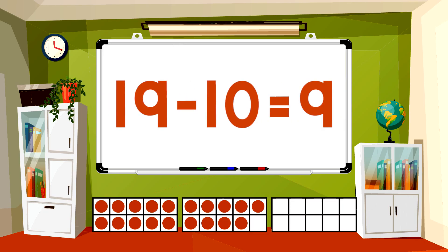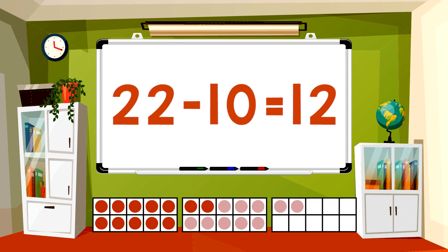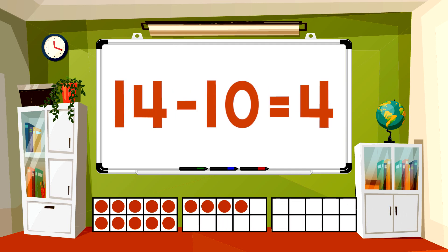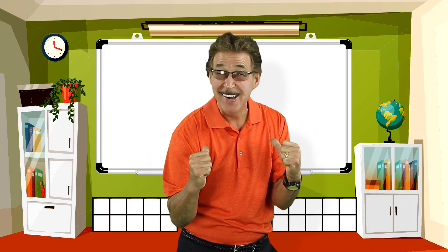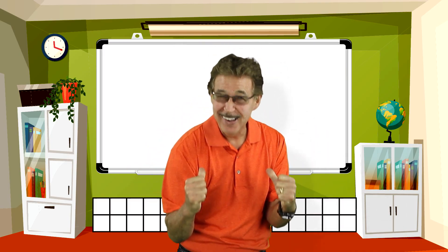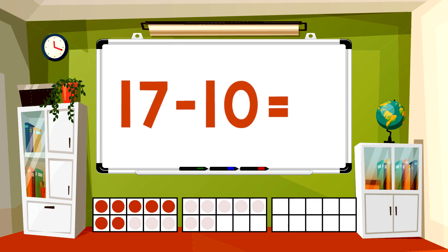19 minus 10 equals 9. 22 minus 10 equals 12. 14 minus 10 equals 4. Now you answer before me. 19 minus 10 equals 9. 17 minus 10 equals 7.